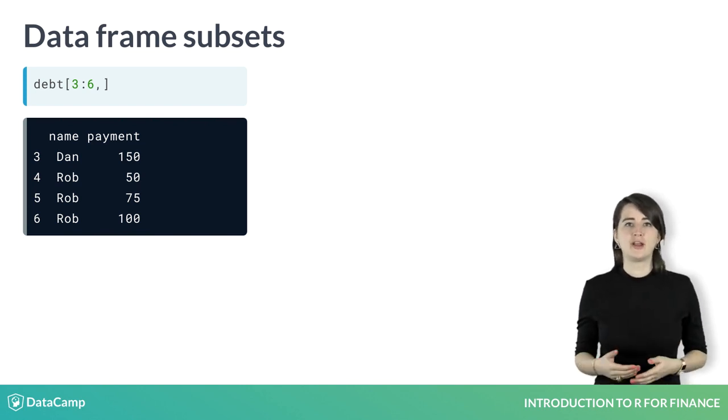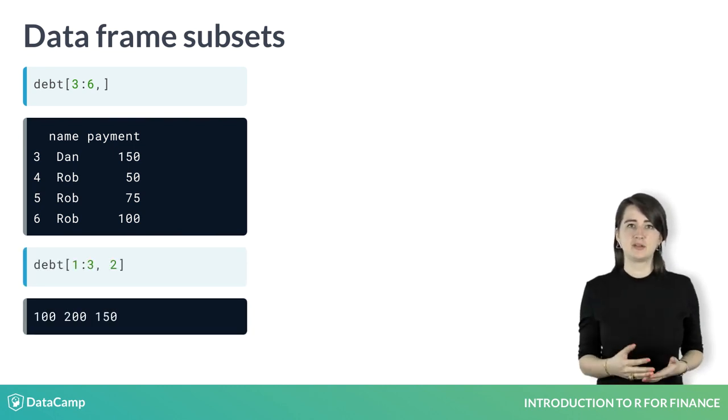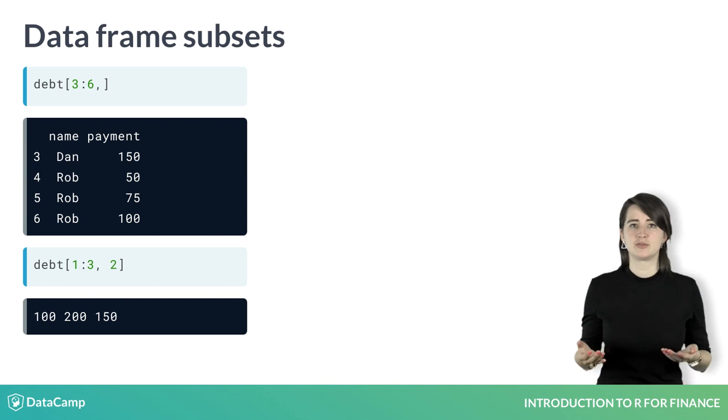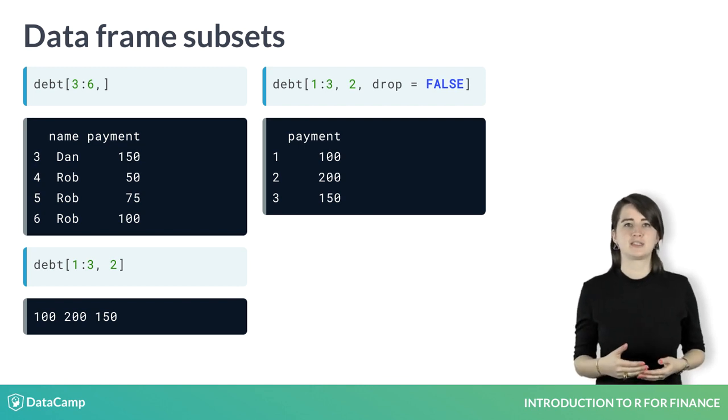One thing to look out for is the simplification that happens when you select a single column. Selecting the first 3 rows of just a payment column simplifies the result into a vector. If you want to keep this as a data frame, you just need to add drop equals F or false inside the brackets.